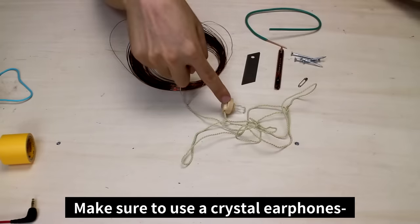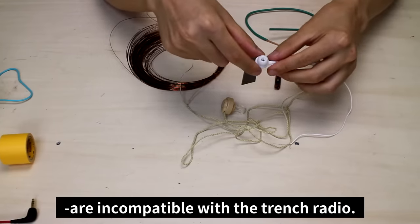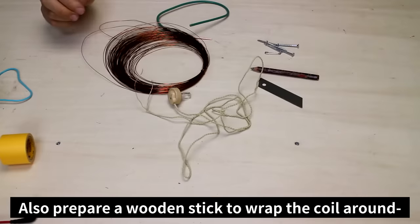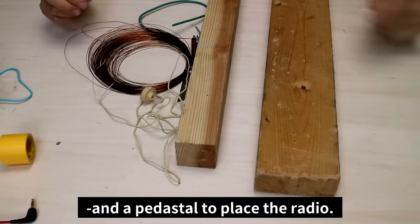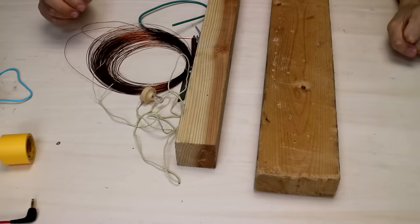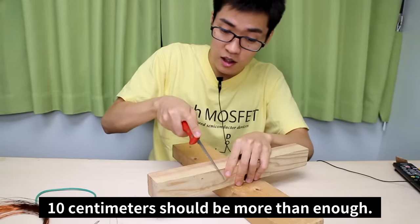Make sure to use crystal earphones because regular headphones are incompatible with the trench radio. Also, prepare a wooden stick to wrap the coil around and a pedestal to place the radio. Cut the wooden stick at a random length. 10 cm should be more than enough.